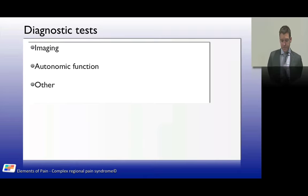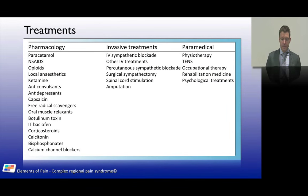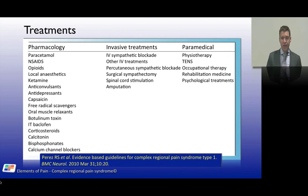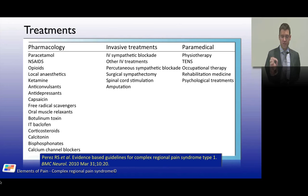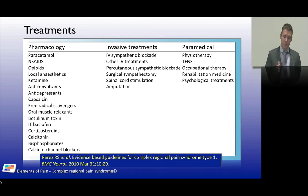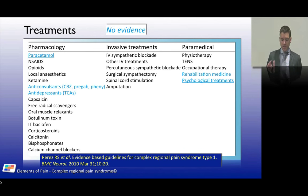Moving to treatments: a 2010 paper by a task force from the Dutch Society of Anesthesiologists reviewed evidence-based treatments for CRPS. Treatments fall into pharmacological, invasive, and paramedical categories. Much of the available evidence is poor quality, which explains the findings presented.